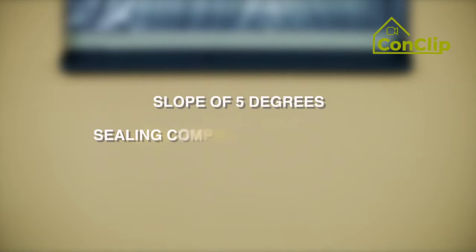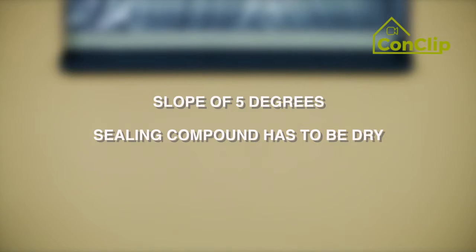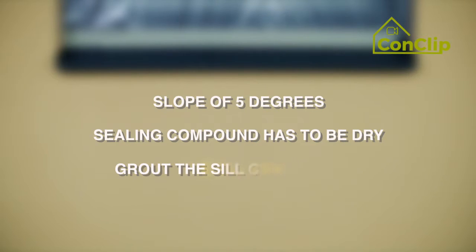To avoid damage through moisture and thermal bridges, it's important to fit the sill area with a slope of 5 degrees to the outside. The sealing compound has to be dry before applying the pre-compressed sealing tape. In the end, grout the joints between the sill and the window and facade.